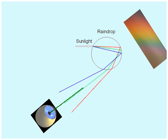A raindrop that's fallen a little farther is just at the right angle to have the green light come to your eye. And that raindrop looks green to you.